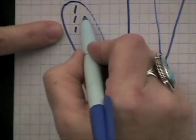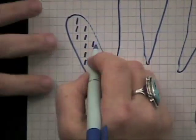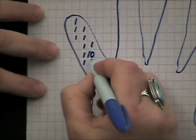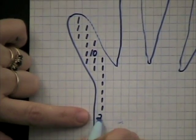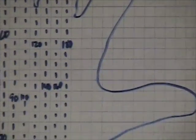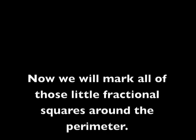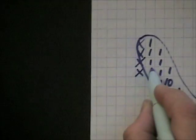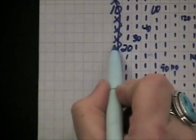Mark the completely interior squares with little dashes, and every time you hit 10, write 10, then 20, then 30, and so on. Put a little dash or a mark on each square, then count: 1, 2, 3, 4, 5, 6, 7, 8, 9 — on the 10th one, write the number 10. Then 11, 12, 13, 14, 15, 16, 17, 18, 19 — write 20. Continue like that, marking groups of ten.